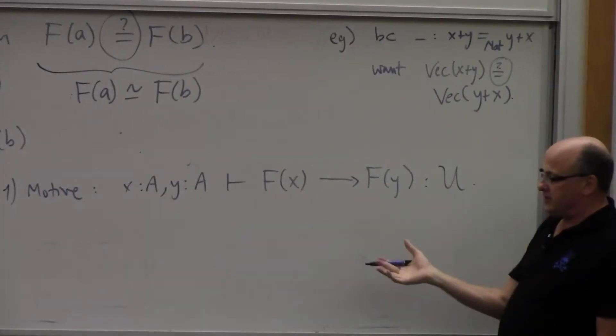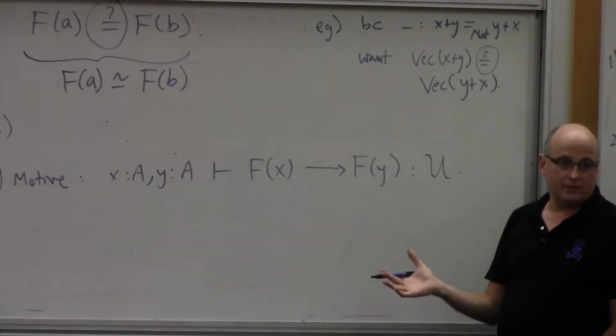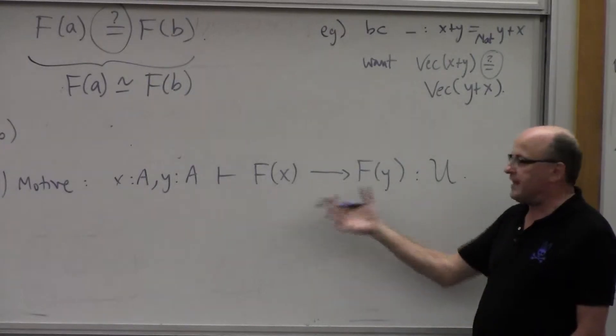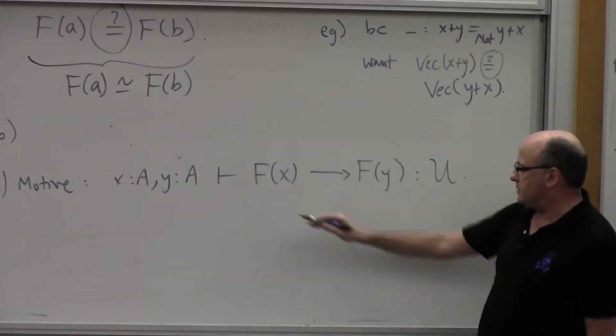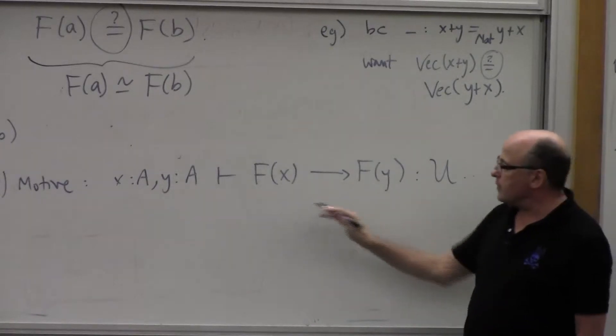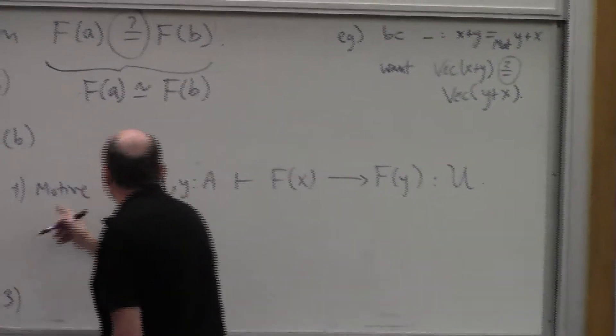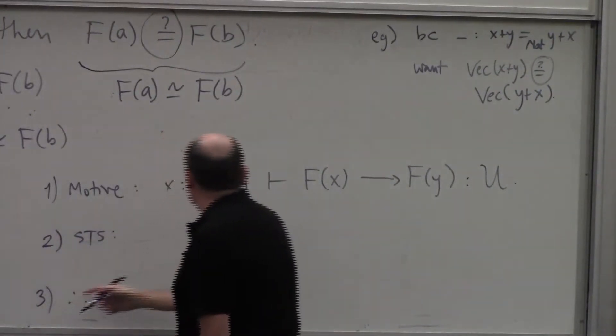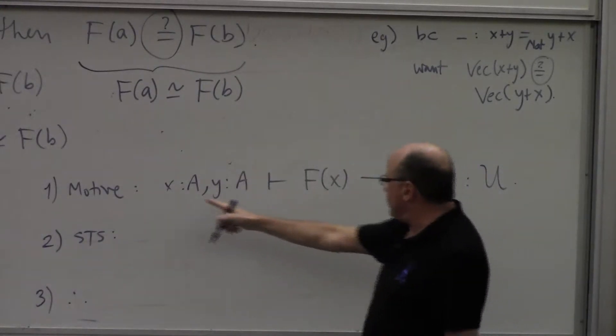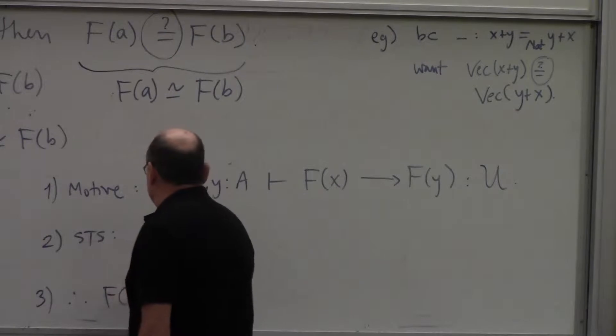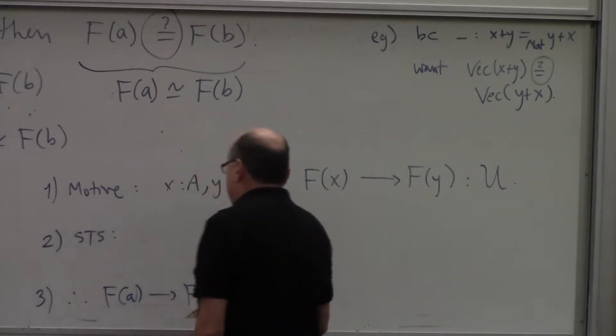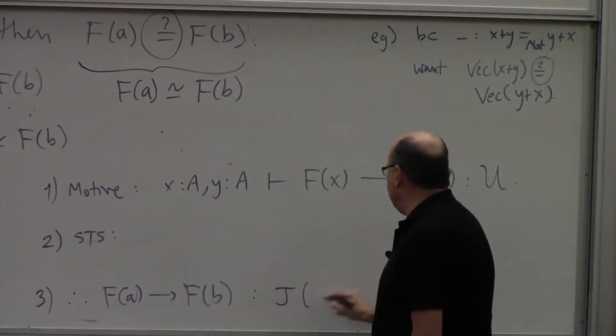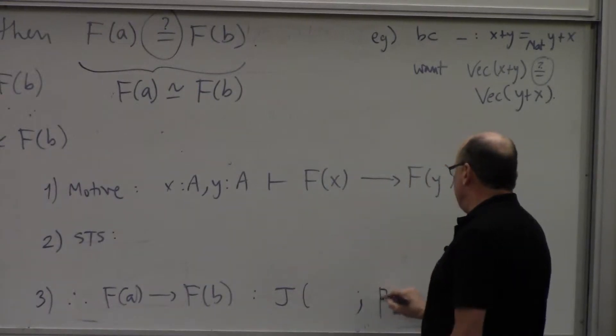The type where the proposition in question says for any x and y I can transport from f of x into f of y. Later what I'm going to show is that p lower star is in fact an equivalence. But first I wanted to find this mapping and then I will show that it's an equivalence. So here's my motive. That's a good motive because it will let me conclude if I can fill in part two.